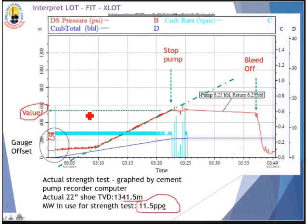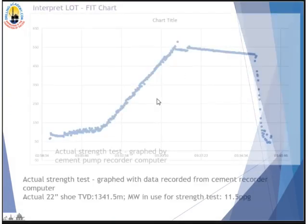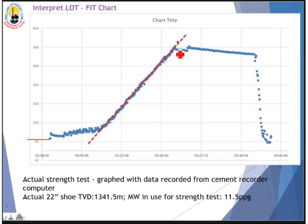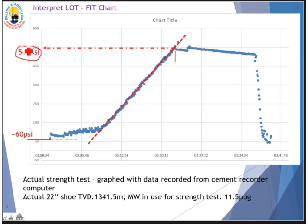From this figure it is hard to read exact pressure values, so we take the cement pump recorder data in Excel format and draw a detailed chart for a closer look. We can see the gauge offset is about 60 to 65 psi. Drawing a linear line along the pressure graph confirms no divergence from the linear line — confirmed as a Formation Integrity Test. The gauge offset is 60 psi. We project from the stop point to the vertical pressure axis.